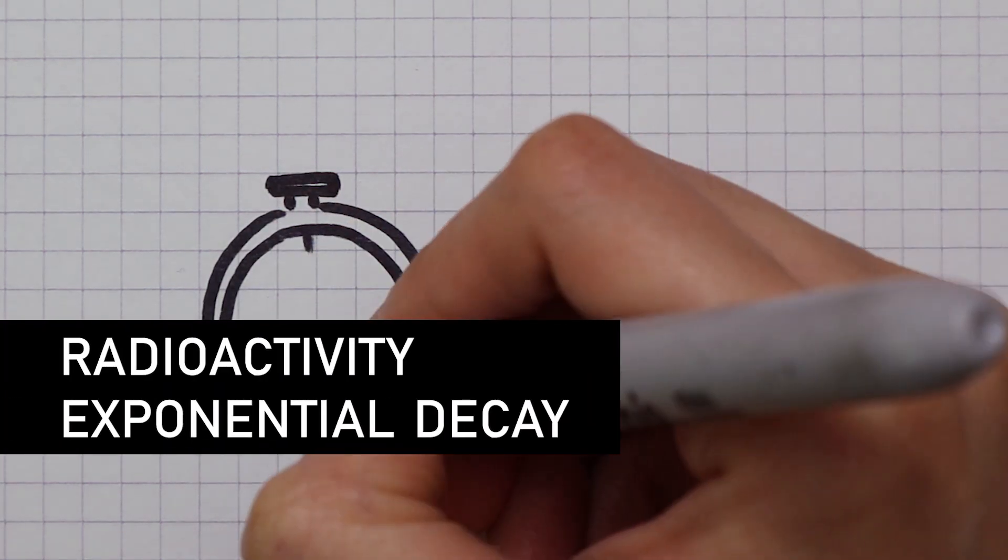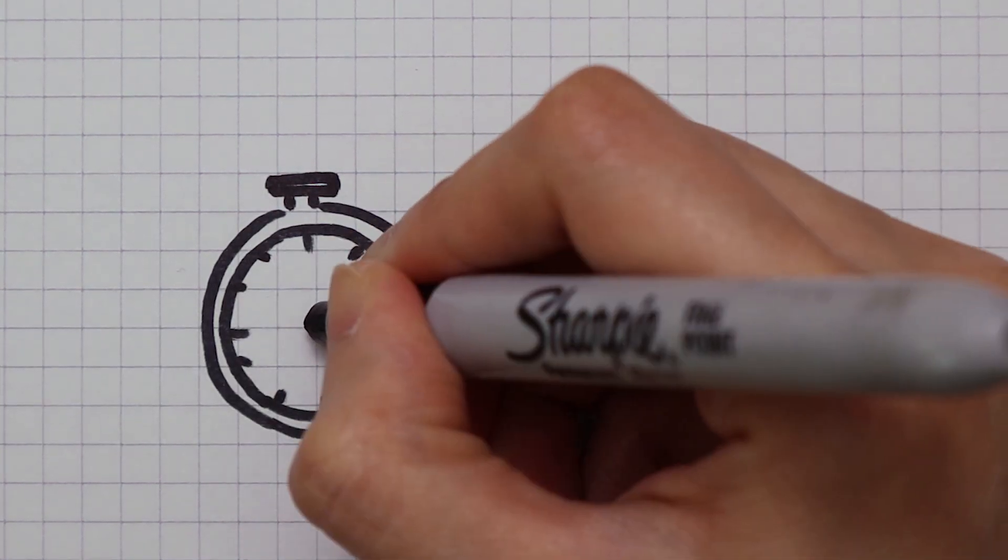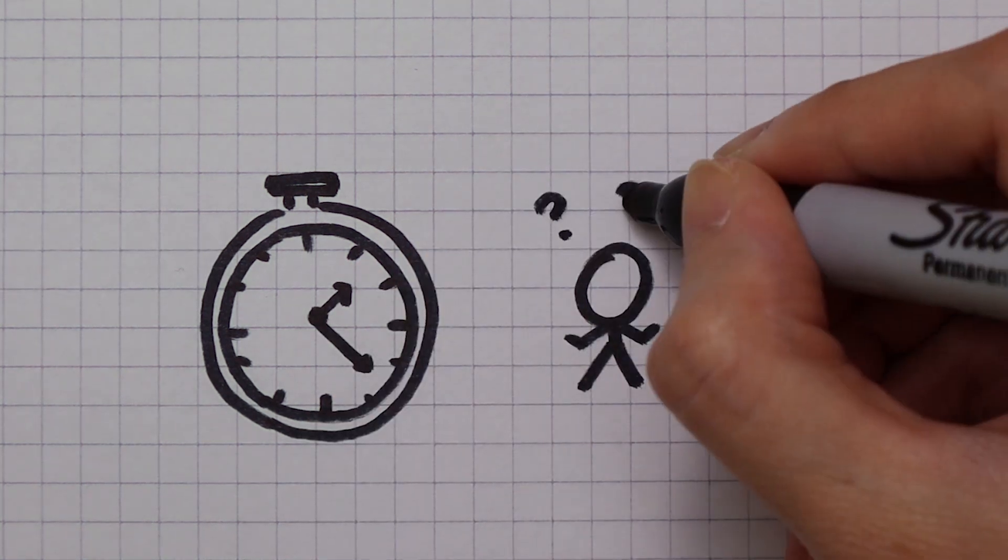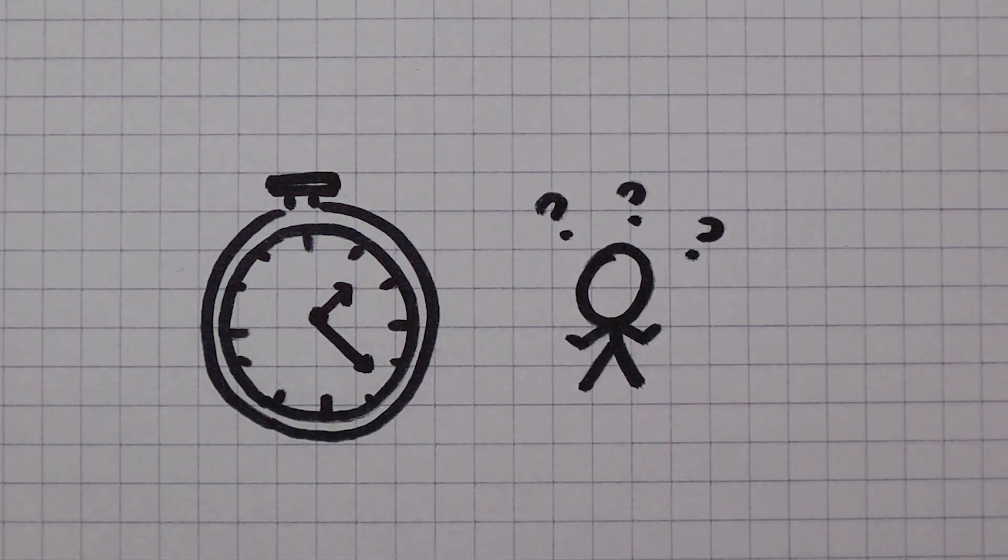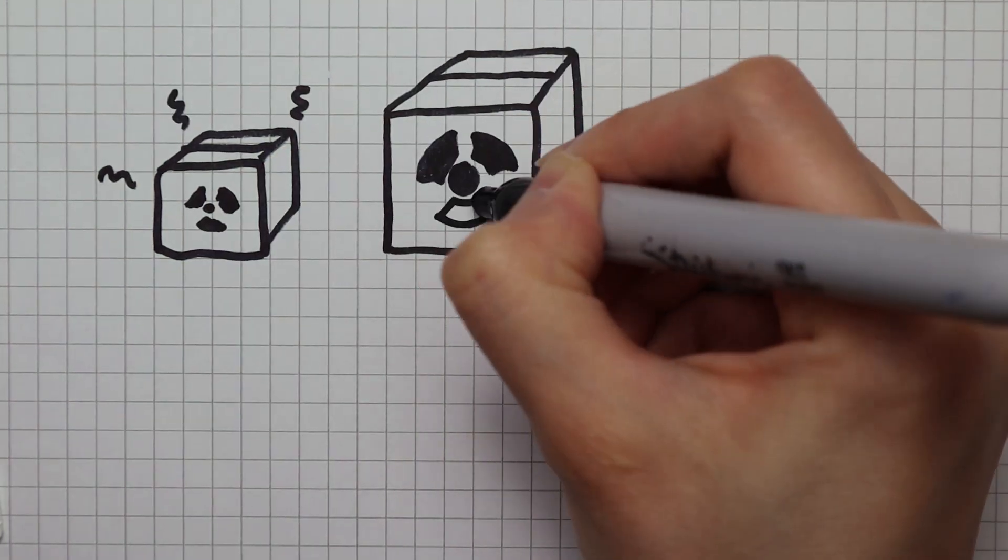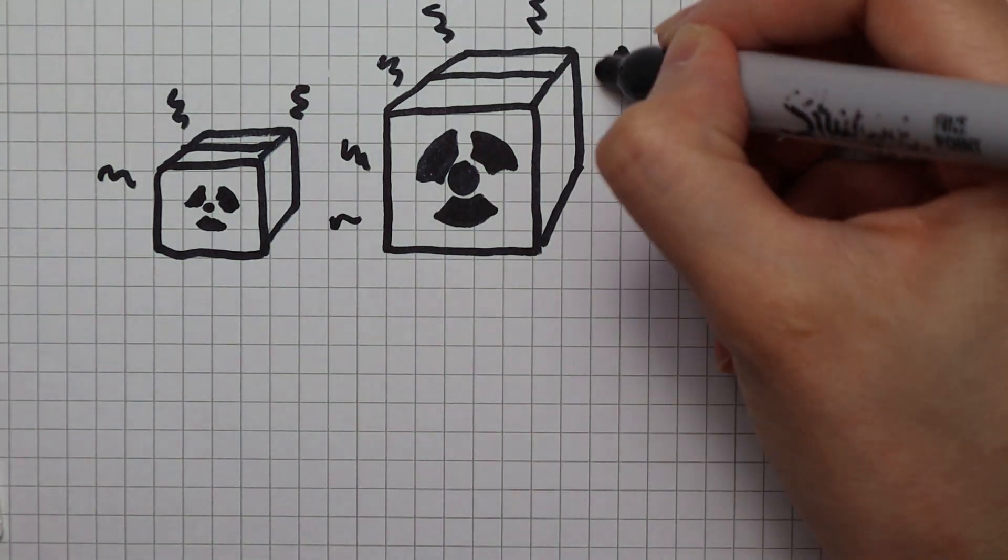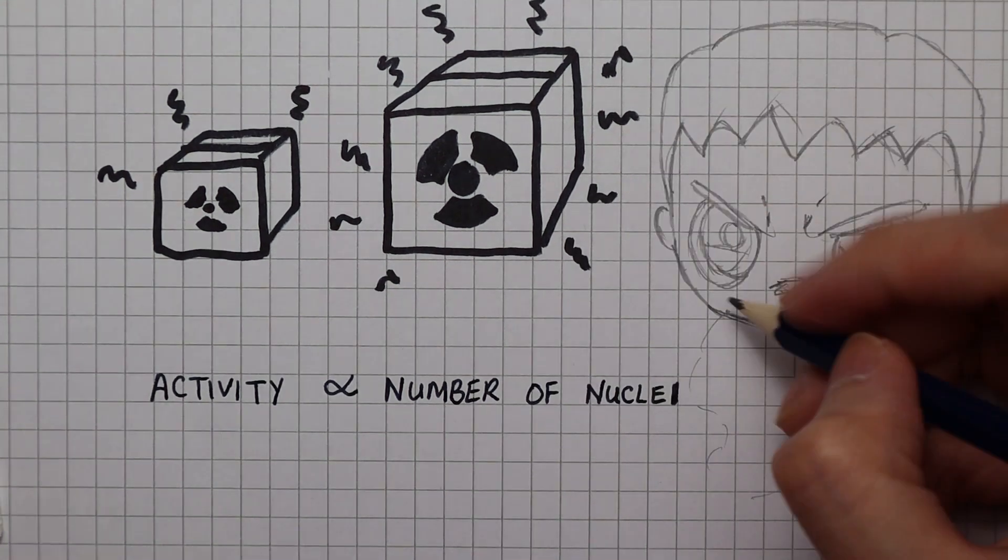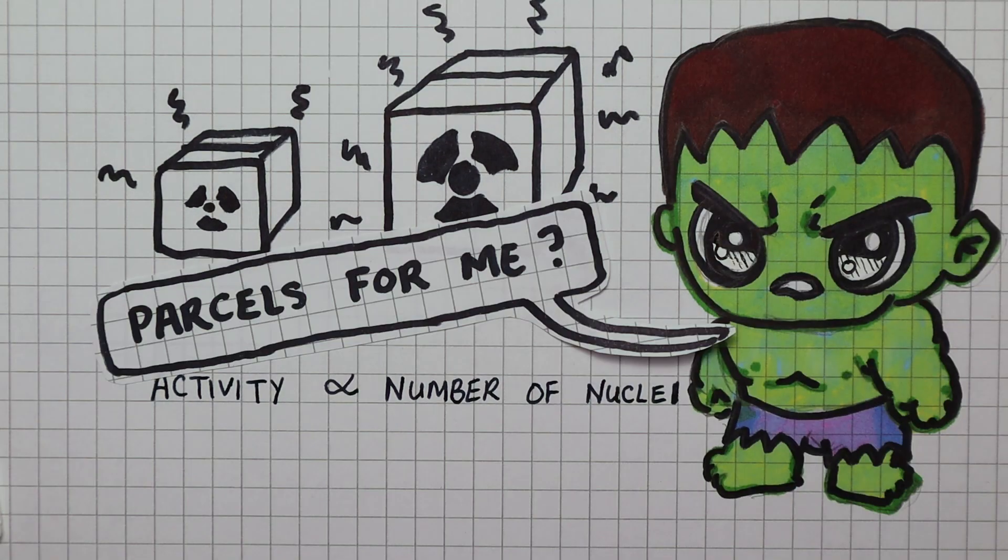Radioactivity is an entirely random process that depends only on the number of radioactive nuclei present in the sample. The more radioactive nuclei there are in the sample, the more radioactive the sample is. So the activity is proportional to the number of nuclei remaining in the sample.